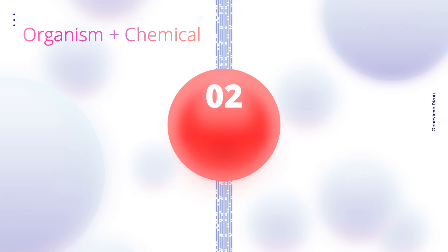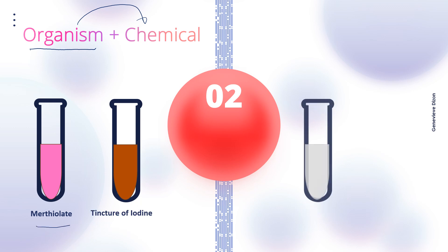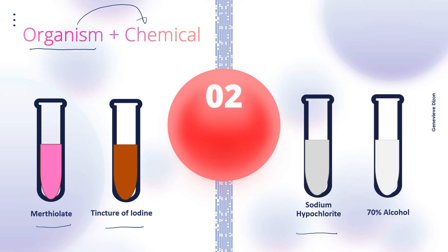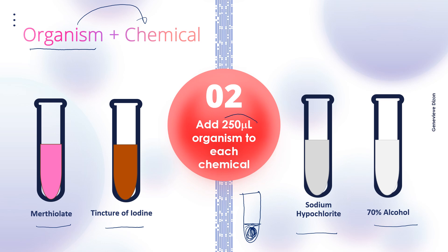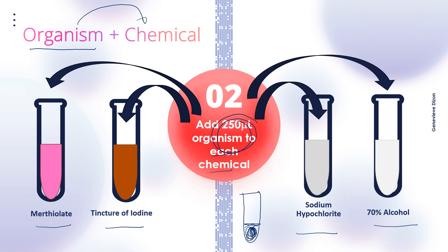The second step is to add the organism given to your group into the different types of chemicals. Each group will have four chemicals: merthiolate, tincture of iodine, sodium hypochlorite, and 70% alcohol. Each group will also receive a stock broth culture of the organism — either S. aureus or Bacillus subtilis. From this, we have to transfer 250 microliters of the organism into each of the chemicals: 250 µL to merthiolate, 250 µL to tincture of iodine, 250 µL to sodium hypochlorite, and 250 µL to 70% alcohol.